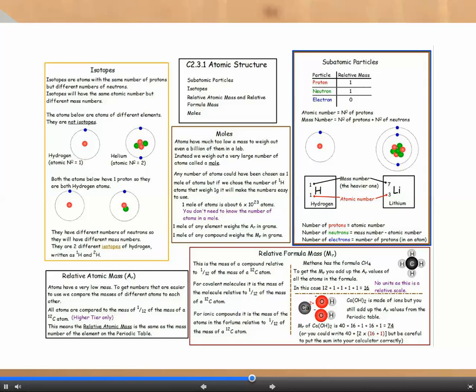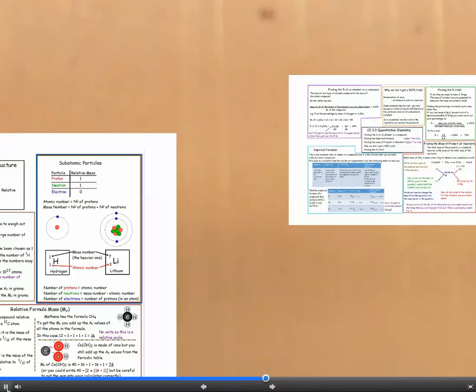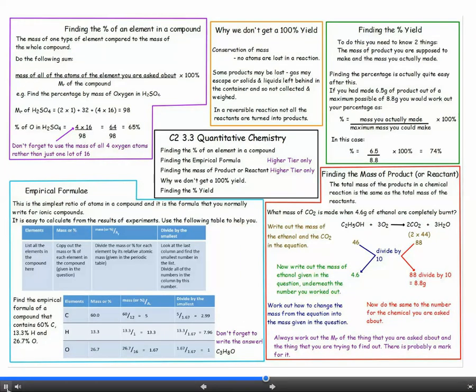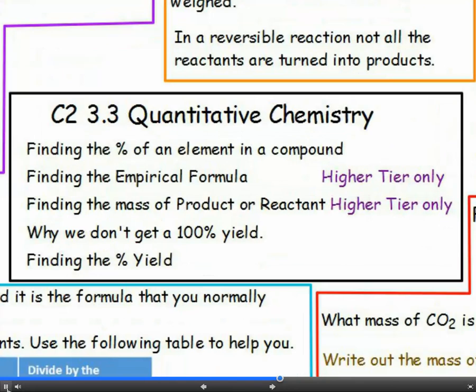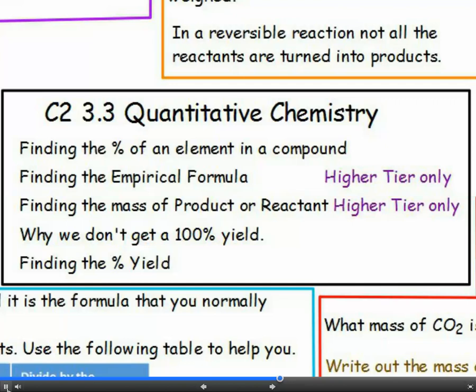Now, we need to use these numbers to work out the answers to chemistry problems. The calculations that you need to be able to do are finding the percent of an element in a compound, finding an empirical formula, finding the mass of product or reactant and percentage yield calculations.